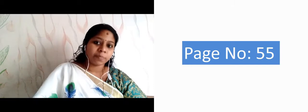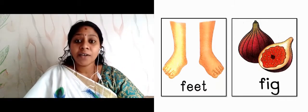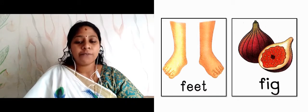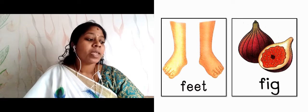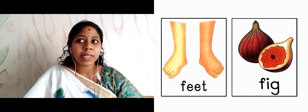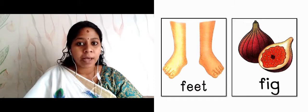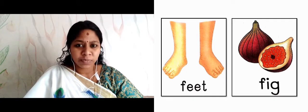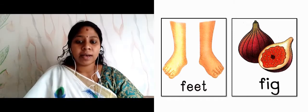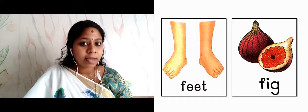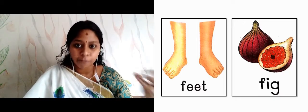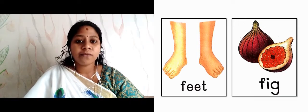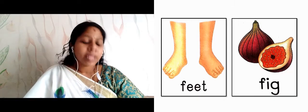Next is page number 55. Take out book number 2 and go to page 55. The image shows feet — F-E-E-T. Next is fig. Fig means anjeer — it's a dry fruit, like cashew and kismis. We say anjeer, we say fig. Actually it's a fruit that we dry.